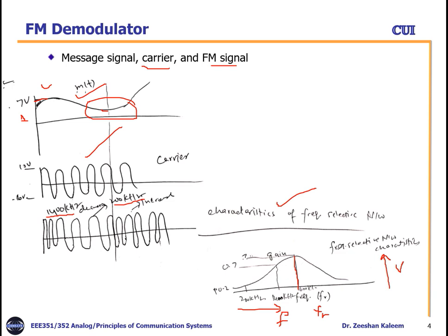At the resonant frequency of 1600 kHz, the gain is 1. For 1400 kHz, the gain is 0.7, and for 200 kHz the gain is approximately 0.2. We use this frequency-voltage curve to obtain the demodulated signal.